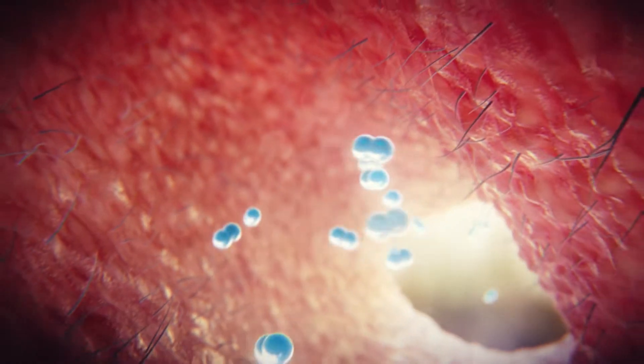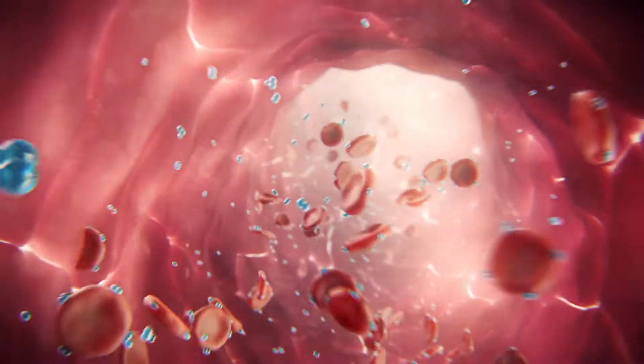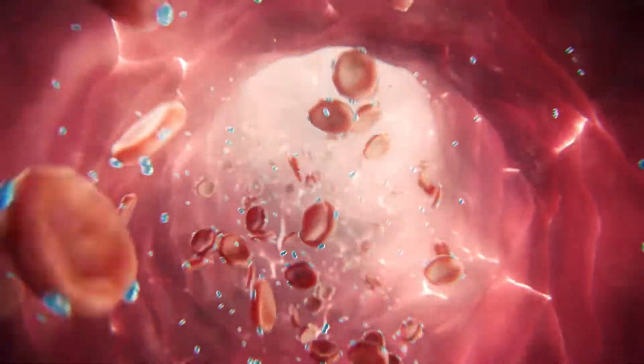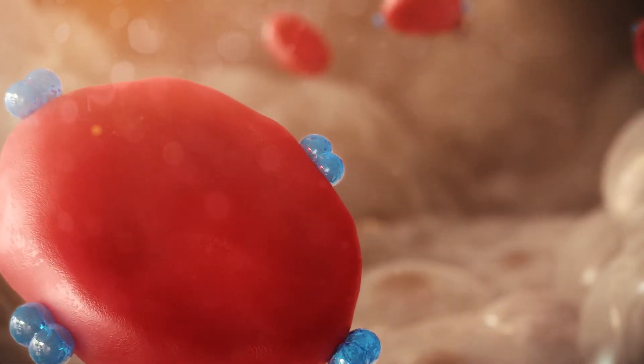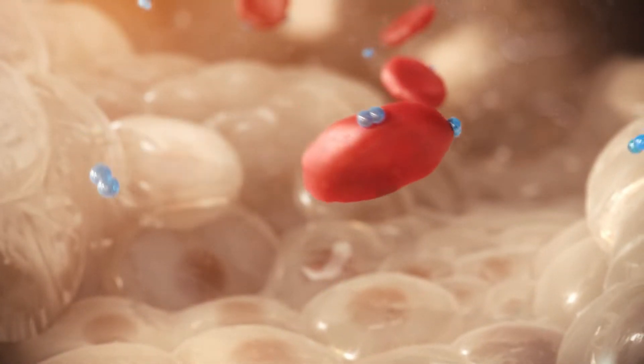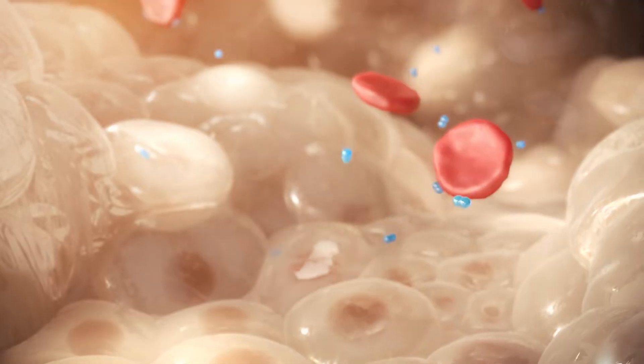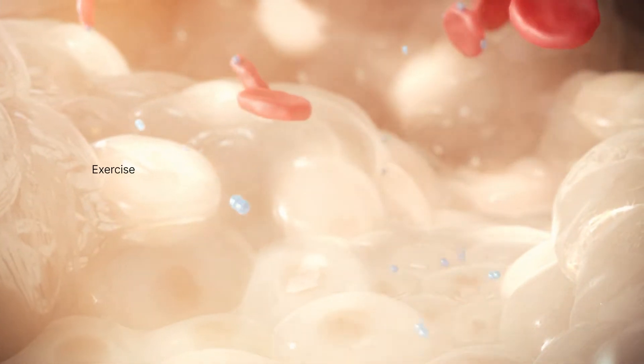Oxygen is breathed in and transported to the tissues by red blood cells. It is delivered to our cells which use the oxygen to supply us with energy through an organelle called mitochondria, and which enables physical functions like exercise as well as healing of damaged tissues.